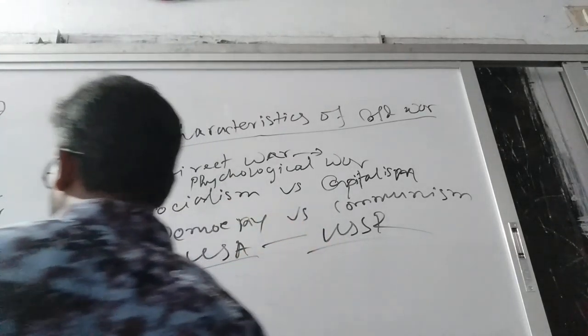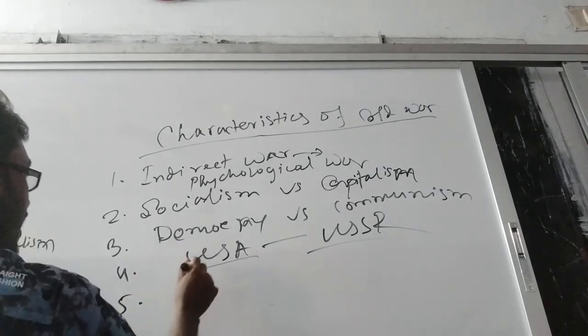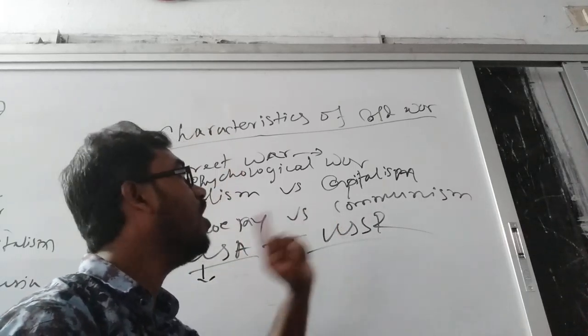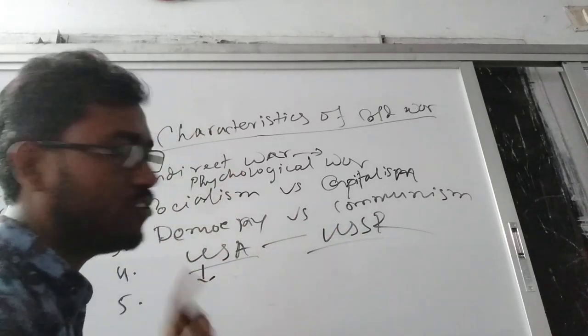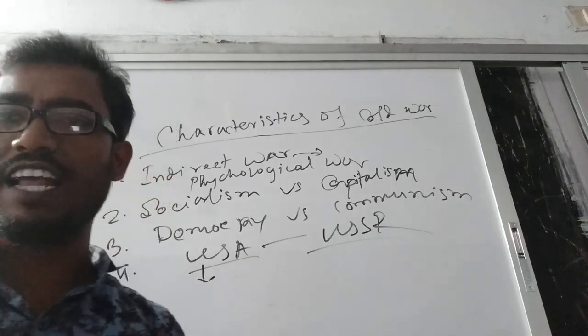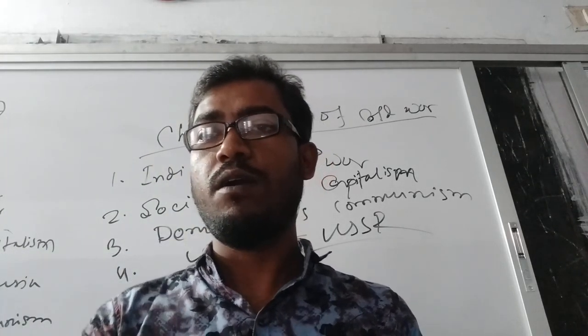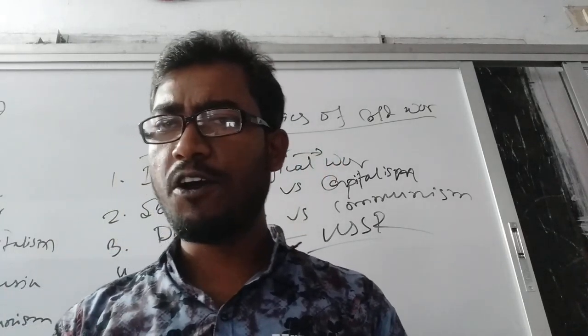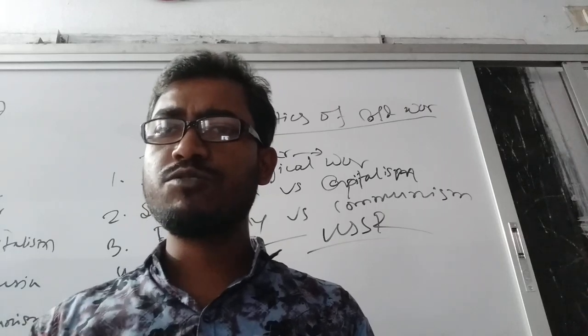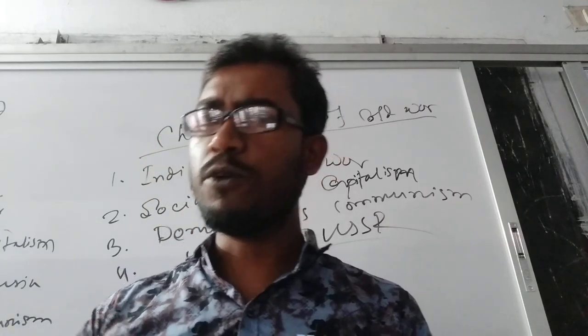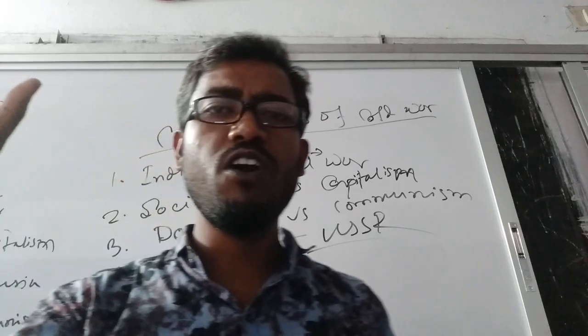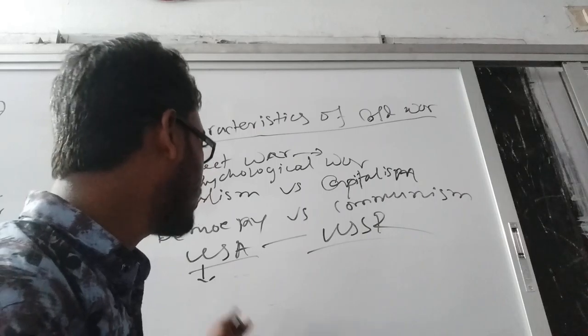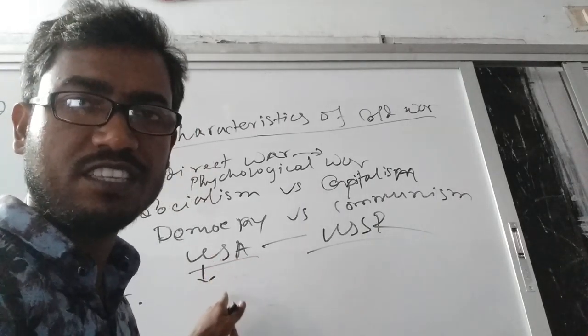Number five, the USA had one block. So USA and Western European countries - there was France, Belgium, the United Kingdom, Netherlands, and Portugal were in this bloc.